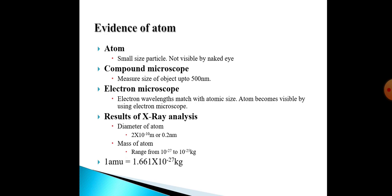Each type of microscope has its own resolution power. We cannot see an atom using a light microscope or compound microscope because the light wavelength doesn't match with the size of an atom. Similarly, the compound microscope can measure sizes up to 500 nanometers, but the size of an atom is much smaller. So in order to view an atom, we need an electron microscope. In an electron microscope, we use an electron beam whose wavelength corresponds with the size of an atom, making the atom visible.